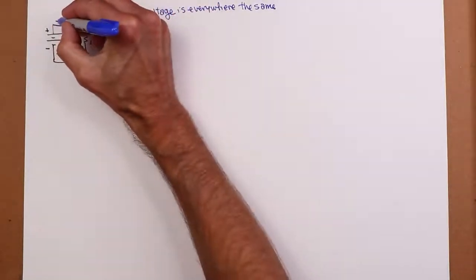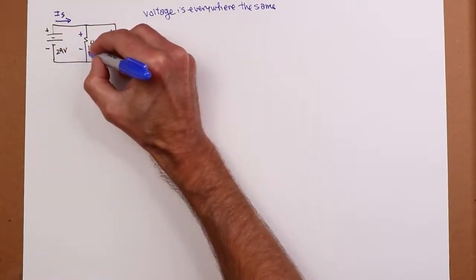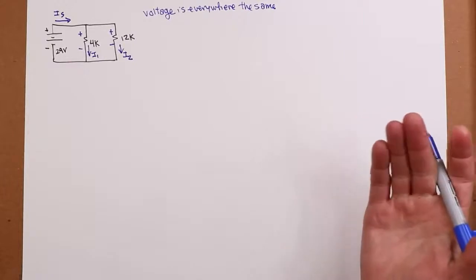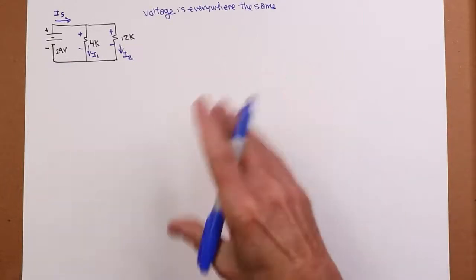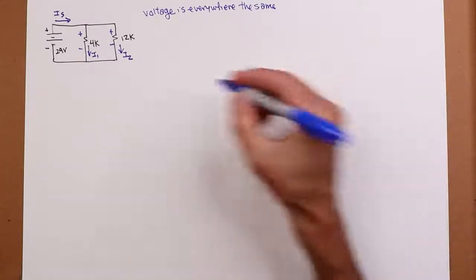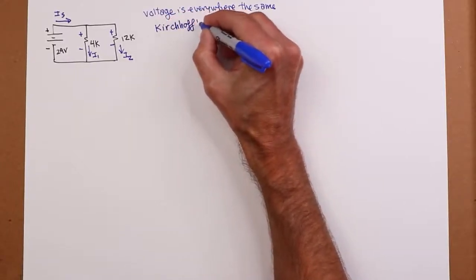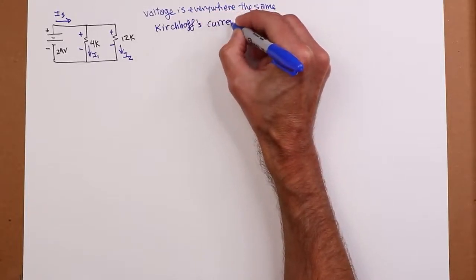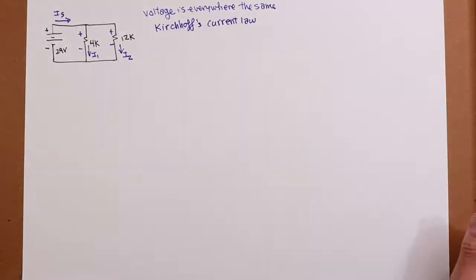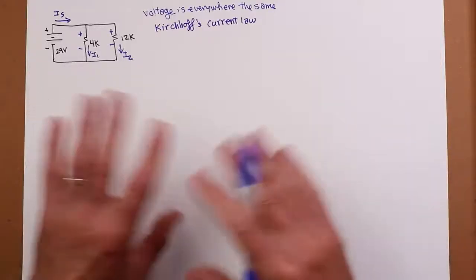Given that, there should be an entering current. This is our source current. And we've got currents down through these two resistors. Call that one I1. We'll call this one I2. Now, just as in the voltage case, where Kirchhoff's voltage law says the summation of voltage rises must equal the summation of voltage drops, there is a Kirchhoff's current law. And it says something very similar. Namely, that the summation of currents entering a node have to equal the summation of currents exiting.